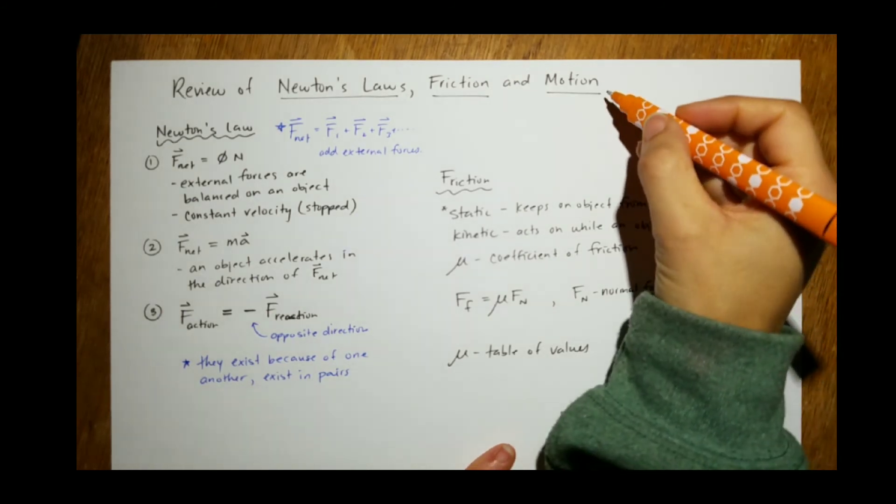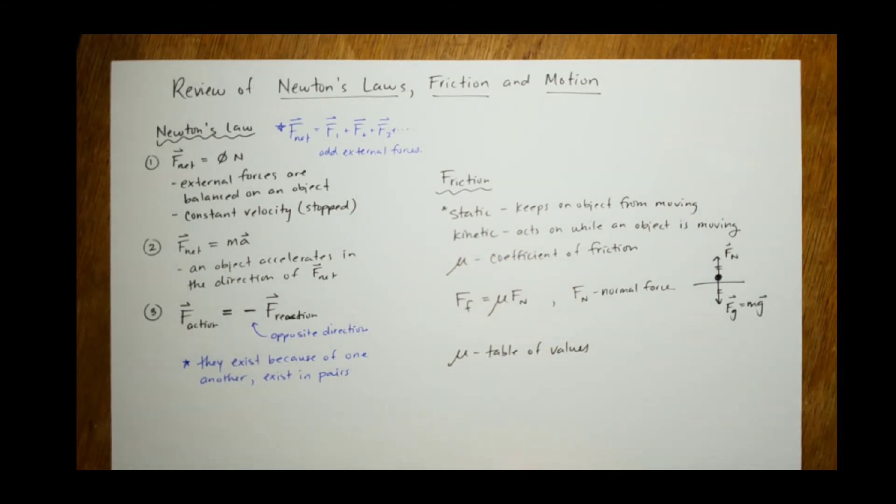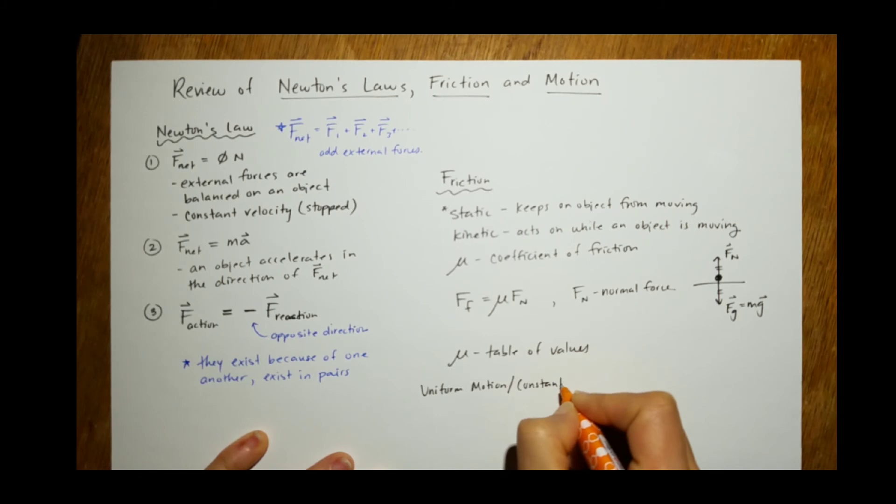The biggest thing to know about motion with all of these is the difference between accelerated motion and uniform motion. So, there's only one equation for uniform motion or constant velocity.